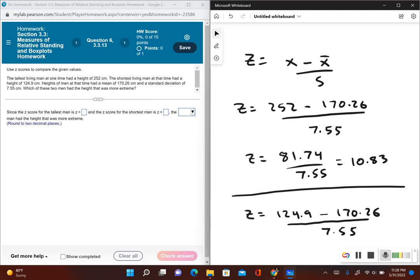So once again, we have to subtract the numerators first, so we have 124.9 minus 170.26, that gives us negative 45.36, and then I divide that by 7.55. This gives us a z-score of negative 6.01.